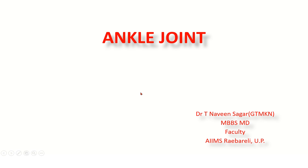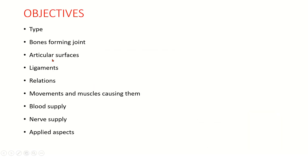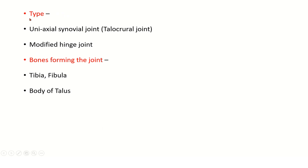In this session we deal with the ankle joint. The headings under which we are going to study are: type, bones forming the joint, articular surfaces, ligaments, relations, movements and muscles causing them, blood supply, nerve supply, and applied aspects. The type is uniaxial synovial joint.